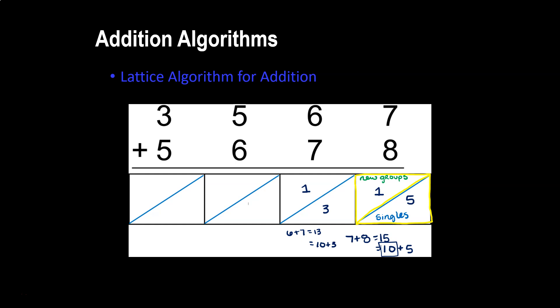Then we'll move on to the hundreds place value. 5 plus 6 equals 11. But 11 is one group of 10 and one single, so I put 1 in the singles position and 1 in the new group. Lastly, 3 plus 5 equals 8. 8 does not make any new groups, so I put 8 in the singles and 0 in the new groups.